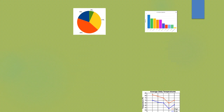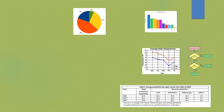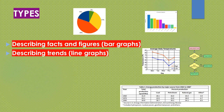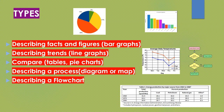Now let's take a look at the types of graphs. We can get anything like a pie chart, bar graph, table, line graph, or flowchart. You describe facts and figures through bar graphs, describe trends through line graphs, make comparisons through tables and pie charts, and describe a process diagram, map, or flowchart.